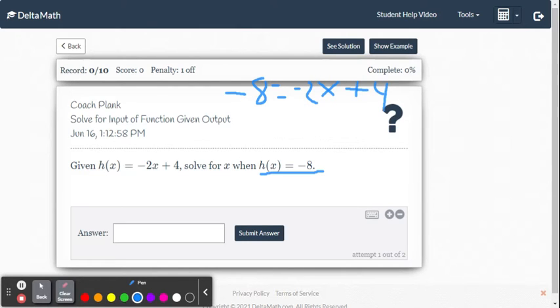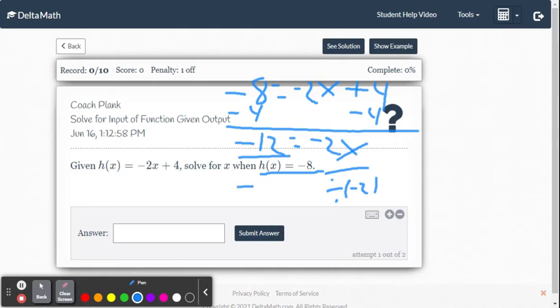Now we have a basic algebraic equation we're going to solve for x. Let's subtract 4 from both sides and we get negative 12 equals negative 2x. Then we want to divide by negative 2 both sides. So we're going to get negative 12 divided by negative 2 is 6 equals our positive 1x. So x equals 6.